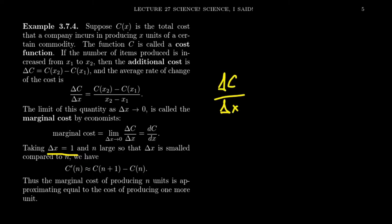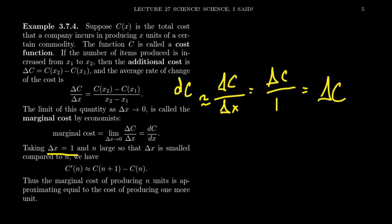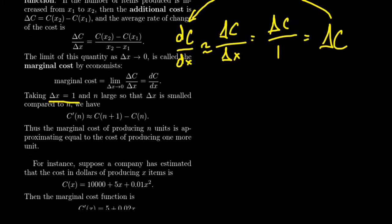Note that if delta x equals one — you increase production by just one unit — then delta C over delta x is simply delta C over one, which is just delta C, the additional cost of one more unit. We also know that when the change in production is small, the average cost is approximately the same as the derivative. This tells economists that additional costs can be approximated by using the derivative. Specifically, the marginal cost at production level n is approximately equal to C(n+1) minus C(n) — the cost of producing that (n+1)st commodity — though it's an approximation, not exact.